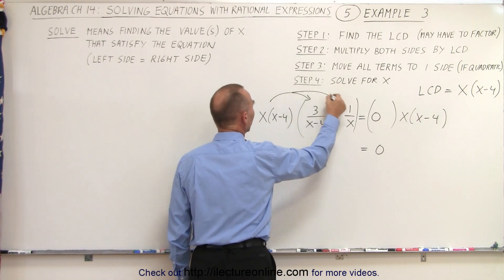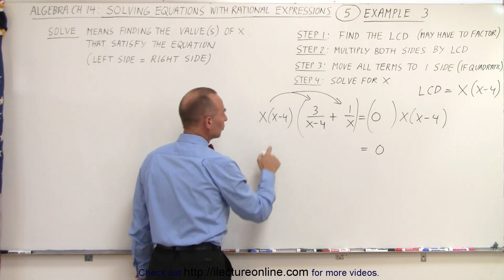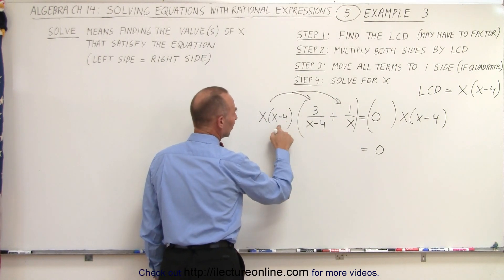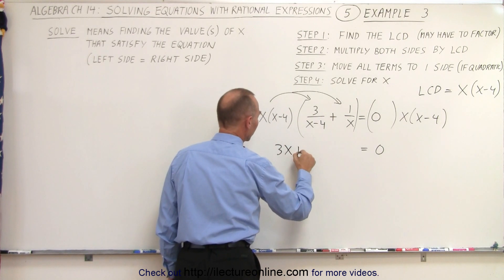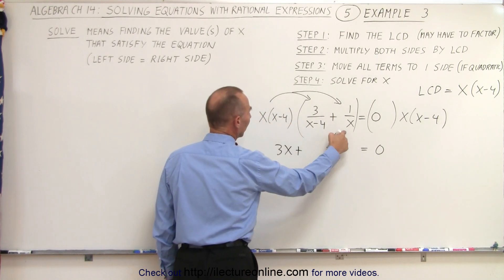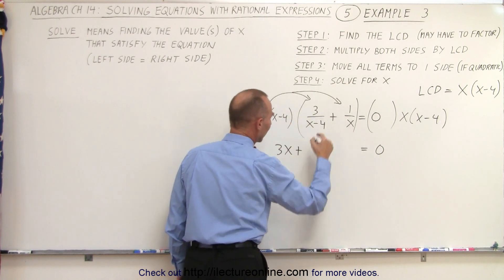But on the left side, we have to multiply this with the two terms. Notice here that the x minus 4 is cancelled out, and we're left with 3 times x. Plus, notice that the x is cancelled out, and we're left with x minus 4 times 1.